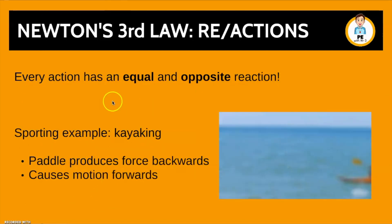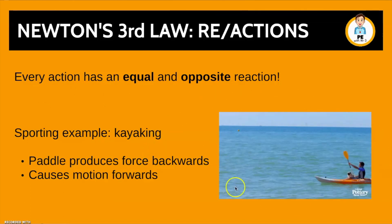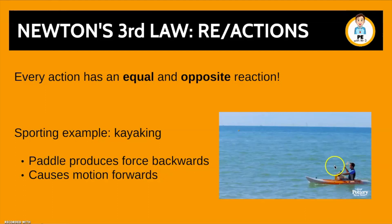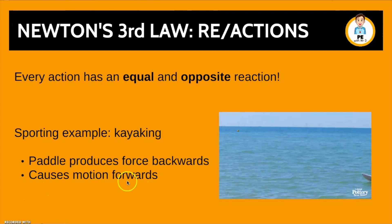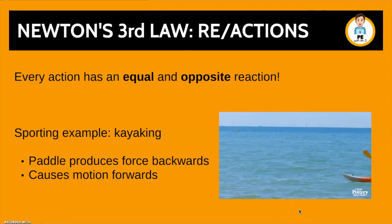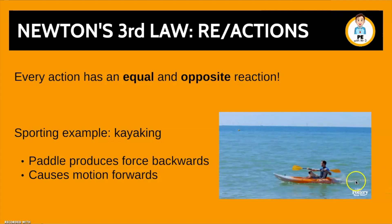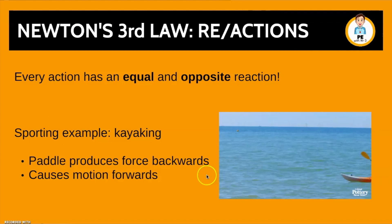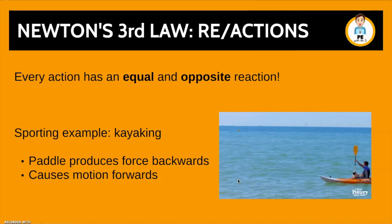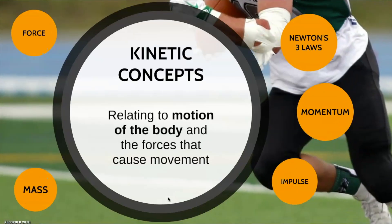Newton's third law is every action has an equal and opposite reaction. The sporting example here is kayaking. The paddle produces a backwards force, as we can see, and this causes a forward motion of the kayak — an equal and opposite reaction. In theory these forces would be exactly the same. However, in reality there are things like water resistance and other external factors which make this not necessarily the case. And those are Newton's three laws.